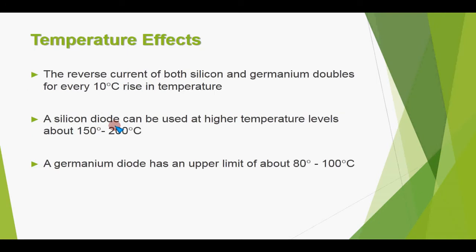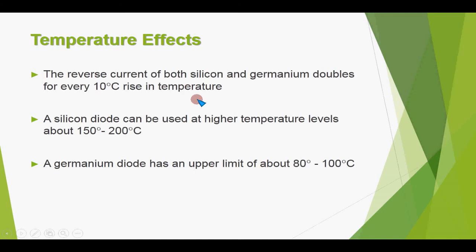What would be the effect of temperature on these diodes? In electronics, temperature is very important to consider. When used in an environment where temperature rises, we prefer the diode that remains useful at higher temperatures. The reverse current of both silicon and germanium doubles for every 10 degree centigrade rise in temperature — for both diodes, a 10°C rise doubles the reverse current.